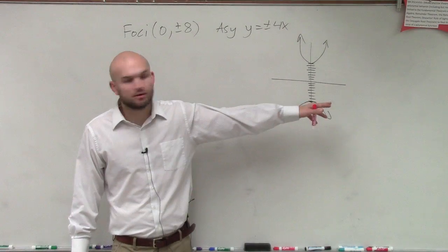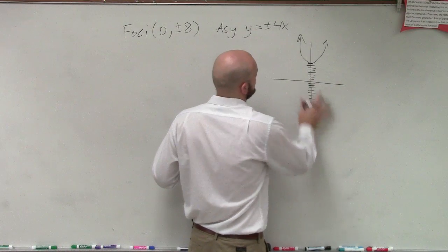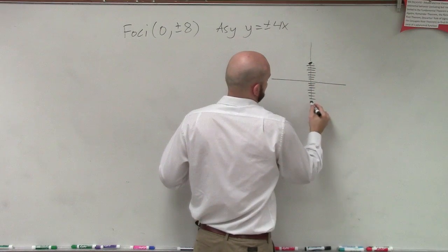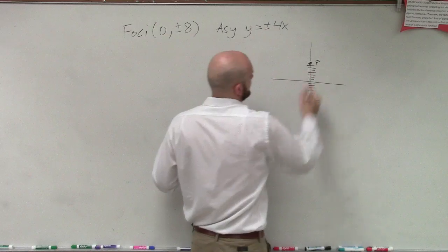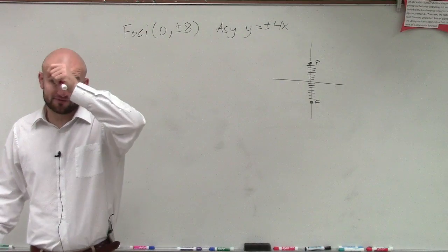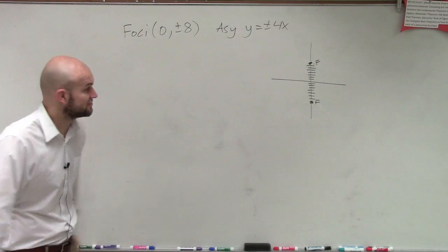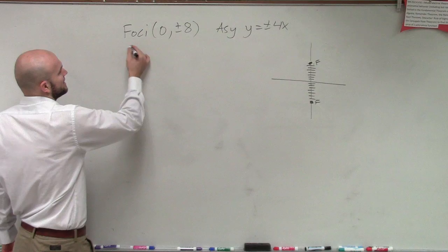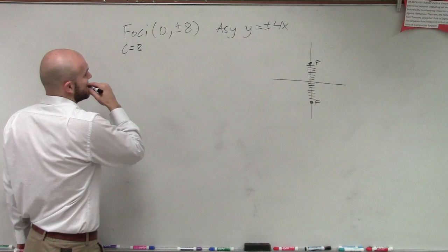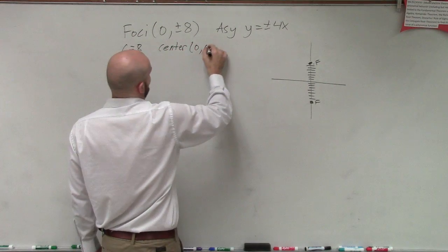We also know what else? Oh, I'm sorry, that's just the foci, right? Not the vertices. We don't know where the vertices are at. So remember that my foci, my vertices, and my center all have to lie on this y-axis, because that's now called my transverse axis. So I know that now c equals 8, and I can say that my center is at 0 comma 0.